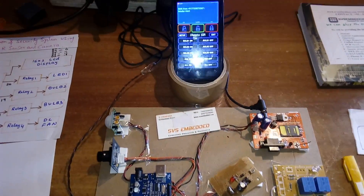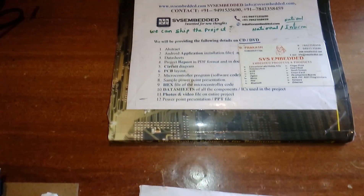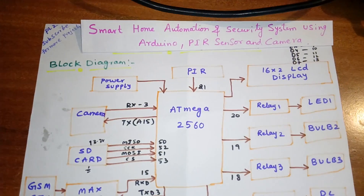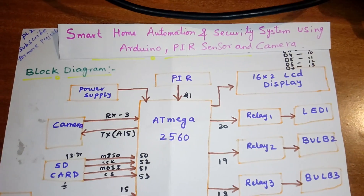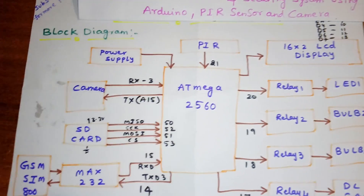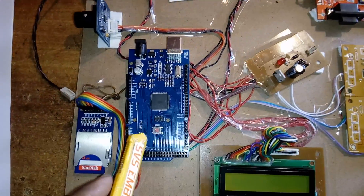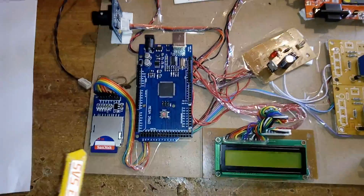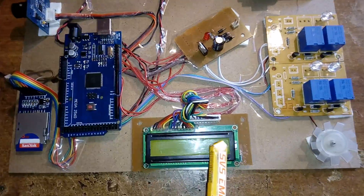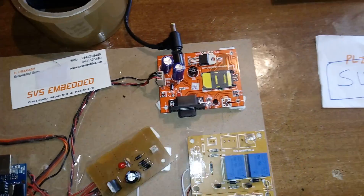Hi, we are from SVS Embedded. The project title is Smart Home Automation and Security System using Arduino. In this project I am using an Arduino Mega 2560 board, a camera, a PIR sensor, an SD card, a 16x2 LCD display, and a SIM800L quad-band GSM modem.